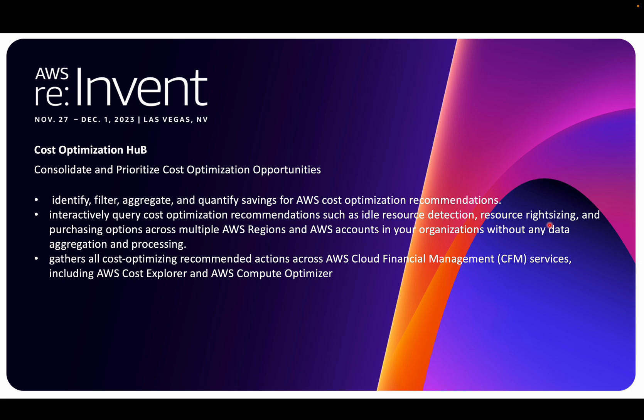For Lambda right-sizing, if you have memory you're not consuming, you can drill down that memory. When we talk about right-sizing we mostly focus on EC2, but it covers purchasing options across multiple AWS regions and accounts in your organization without any data aggregation and processing. This means across regions and accounts, because we have certain savings plans — this will give you guidance on what kind of savings plan to opt for.